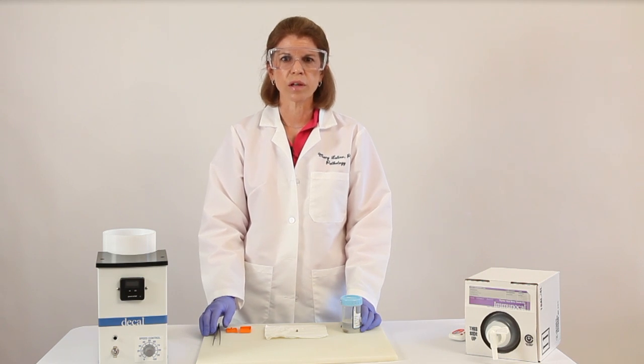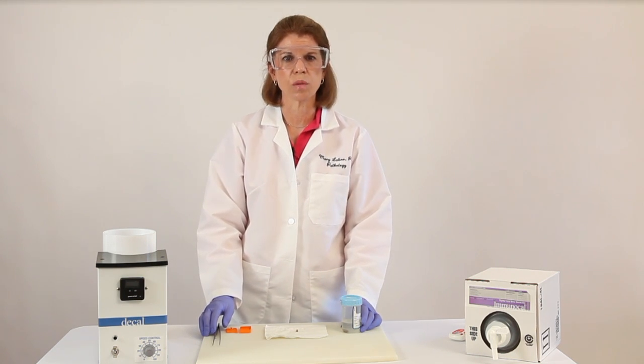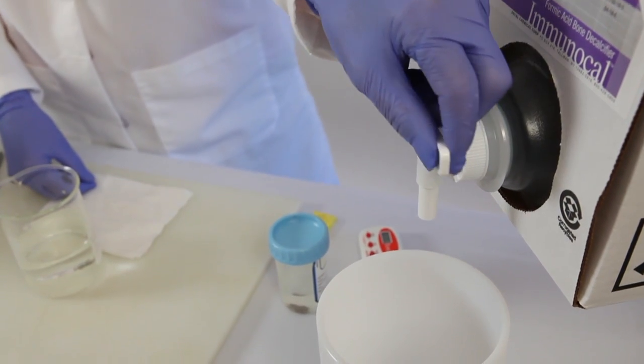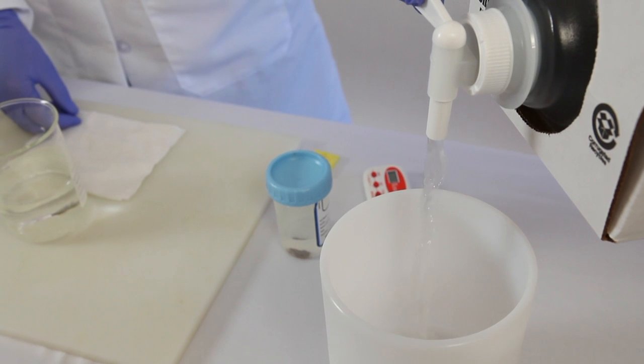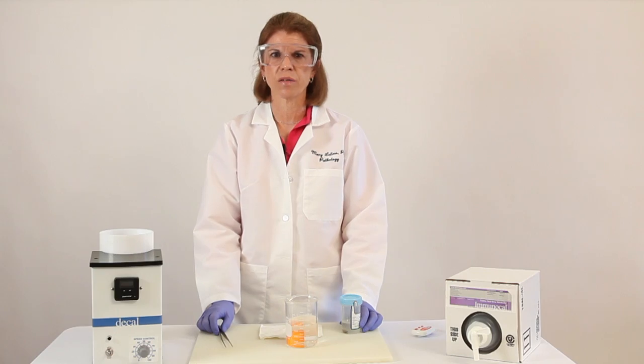So start by pouring your decalcifying solution into a beaker. I use Immunocal from Decal for bone cores. In addition to having these little cubitainers that are easy to pour, it's a very mild formic acid decalcifier.